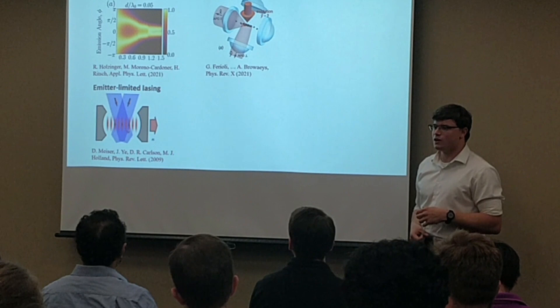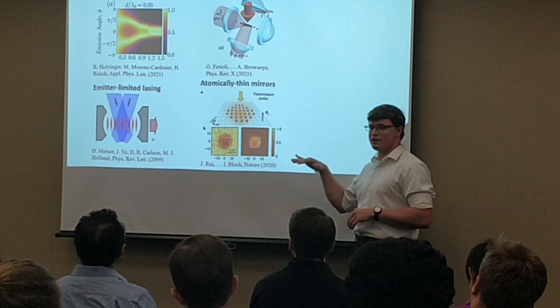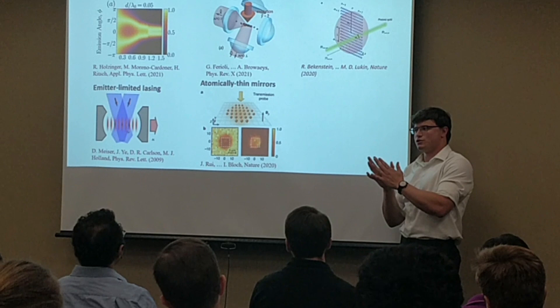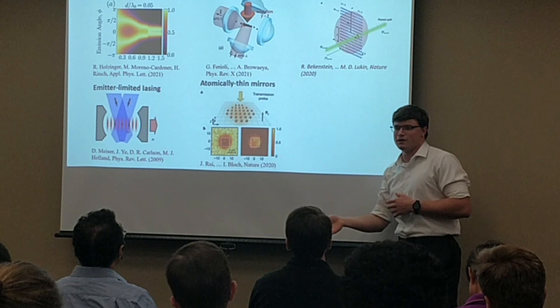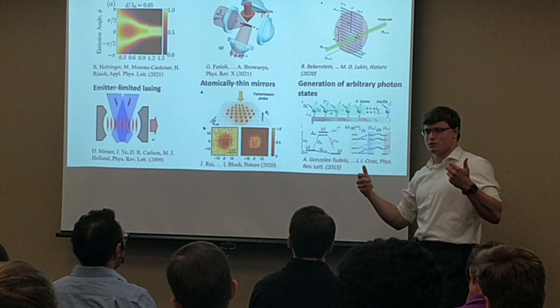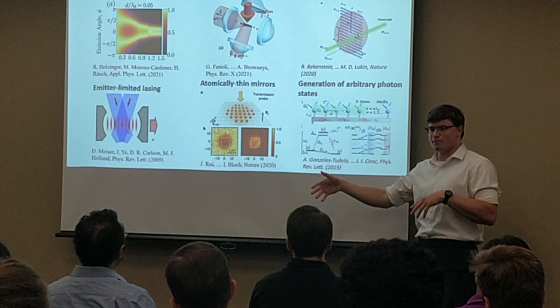Another interesting application is quantum metasurfaces — a lattice of atoms forming an atomically thin mirror. A single atom in the center could control whether the mirror is reflective or transmissive, mapping a superposition onto a photon for quantum information. A more exotic proposal is that with three-level systems coupled to each other, you could switch subradiant states to superradiant states — storing states in the subradiant manifold and then deterministically releasing an arbitrary photon state into a guided mode.